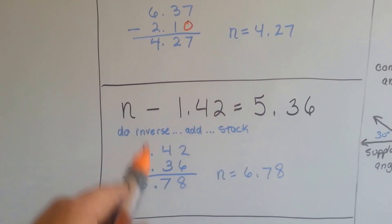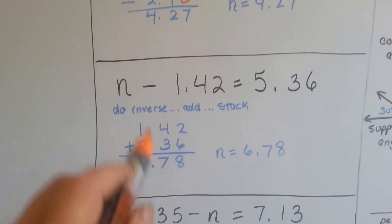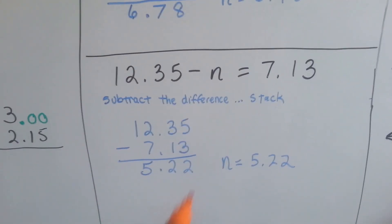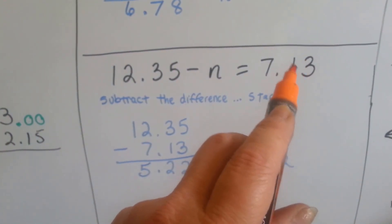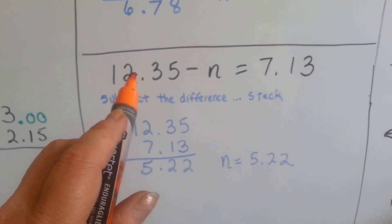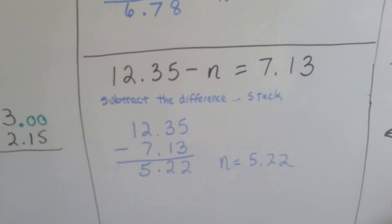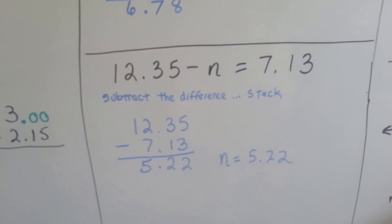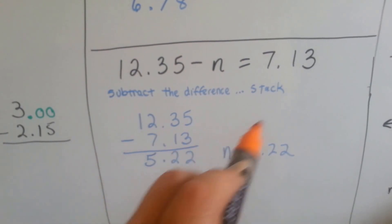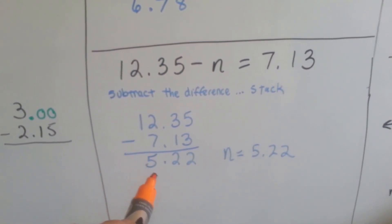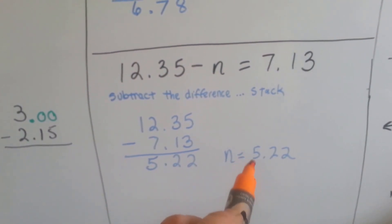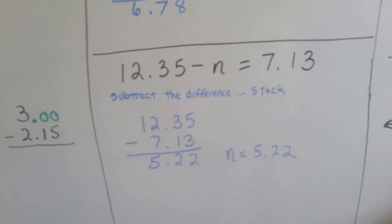Just add those two together and keep our decimal points all pretty and perfectly straight. If n is here and it's missing, we could subtract the difference from this number and we would be able to get our answer, wouldn't we? So we have 12 and 35 hundredths take away the difference of 7 and 13 hundredths. We would get 5 and 22 hundredths and that would be n. That would be n right there.